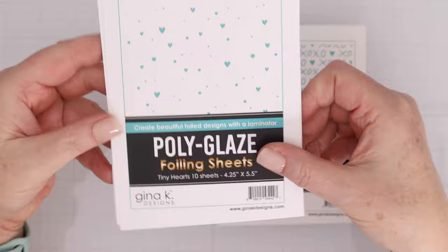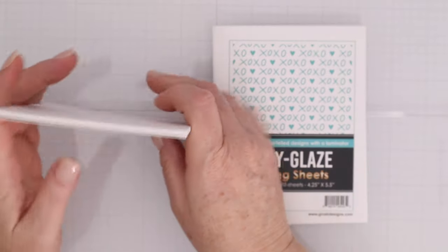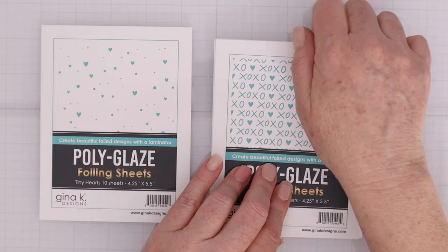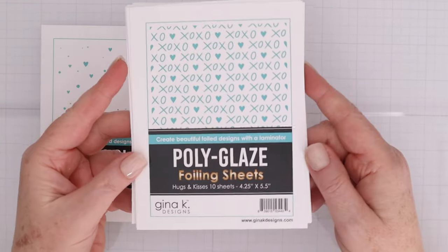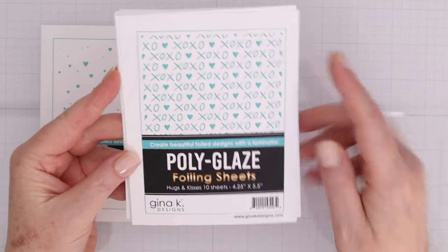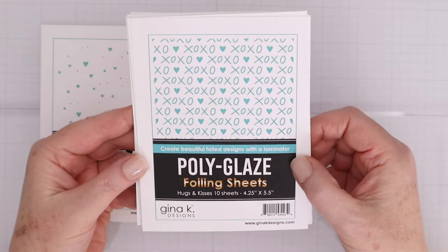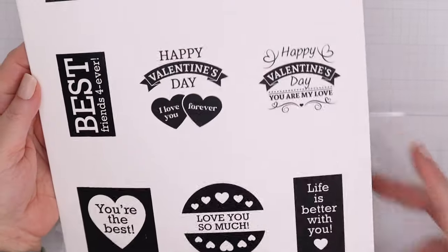This one is called Tiny Hearts and has a bunch of tiny hearts. The other one is called Hugs and Kisses and what you'll notice is they are not printed in black toner. That is the difference between the black toner and the polyglaze.